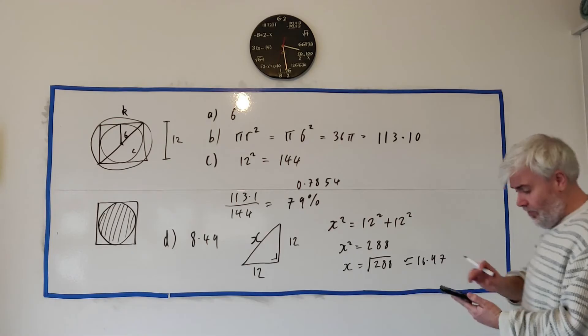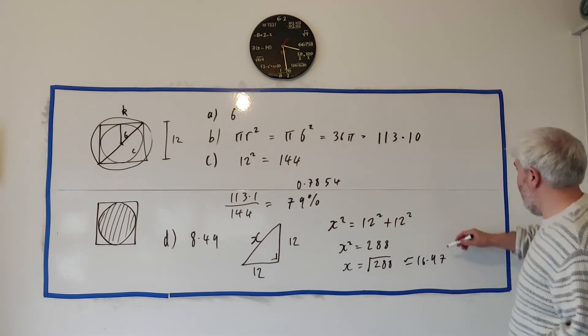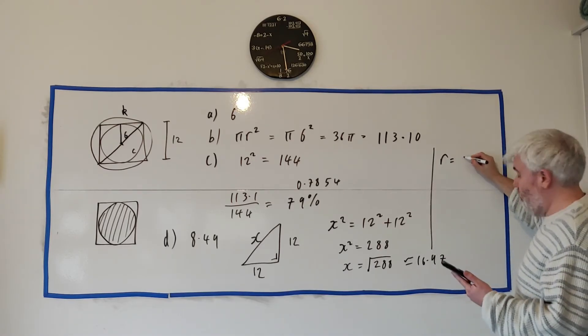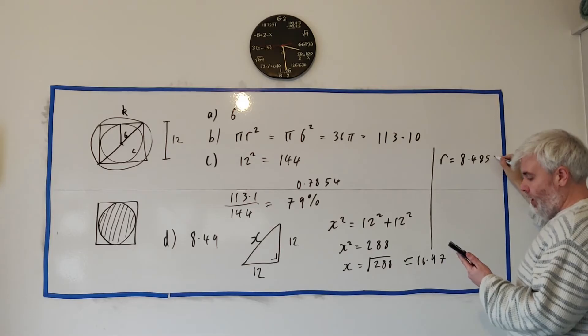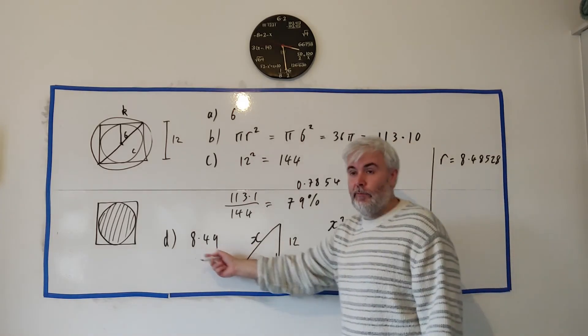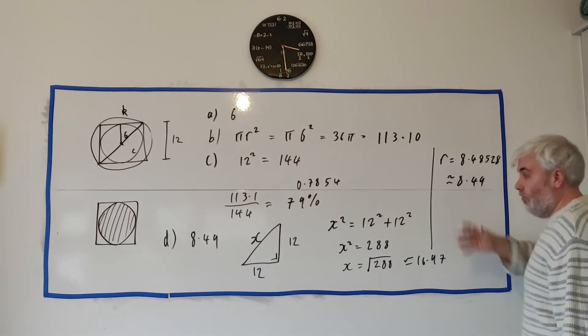But I wouldn't use this number, I'd use my calculator because what I really want is half of this. Just divide it by two and I would get r is equal to 8.48528, that rounds off to two decimal places, that's roughly 8.49. That's it, you've shown that that is the correct answer to two decimal places.